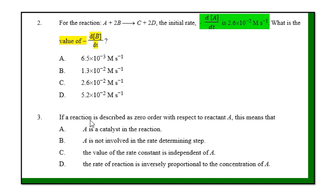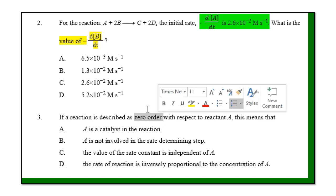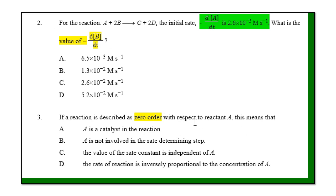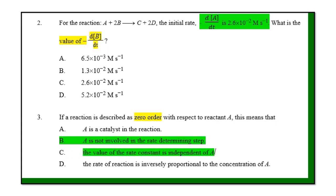Question three: if a reaction is described as zero order with respect to a reactant, what is the characteristic of zero order? Option A says it is a catalyst — no, it is the reactant. The correct answers are B and C: the reactant is not involved in the rate-determining step, and the rate is independent of concentration. The option saying rate is inversely proportional to concentration A is not a feature of any standard order.